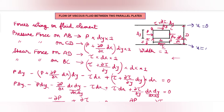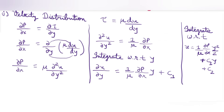Here u = 0 at the boundaries. At the lower plate y = 0, and at the upper plate y = D. These are the boundary conditions we will use.